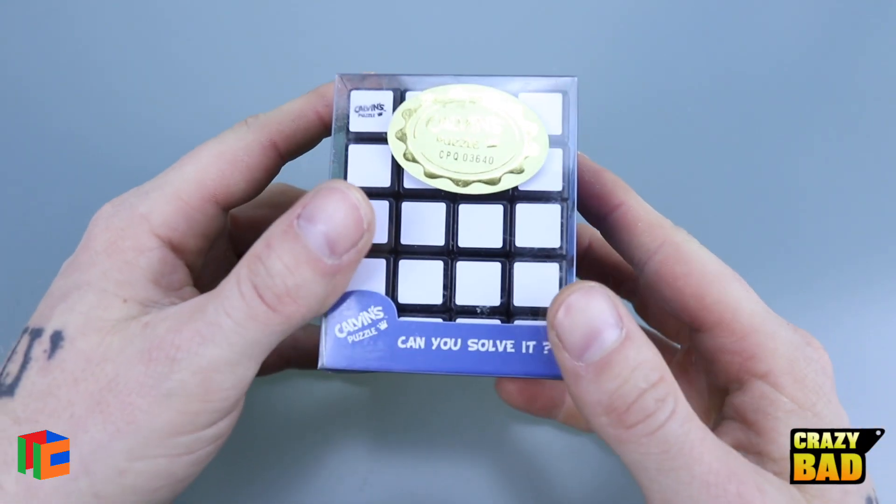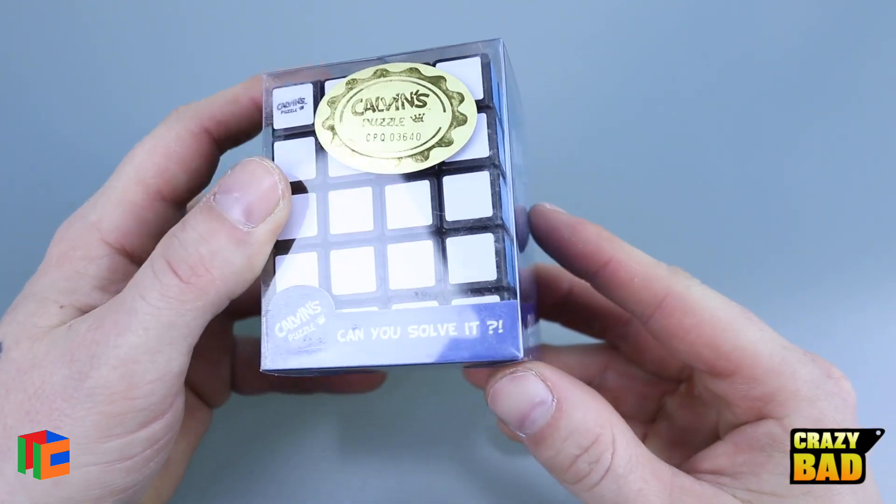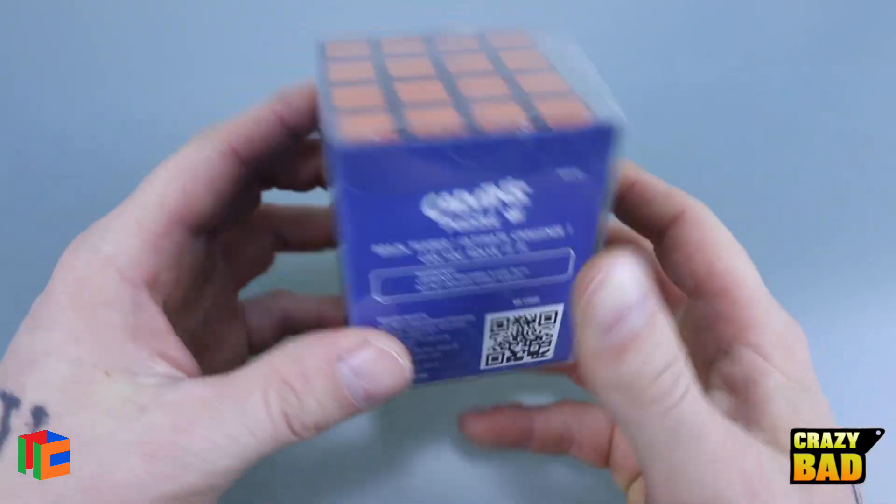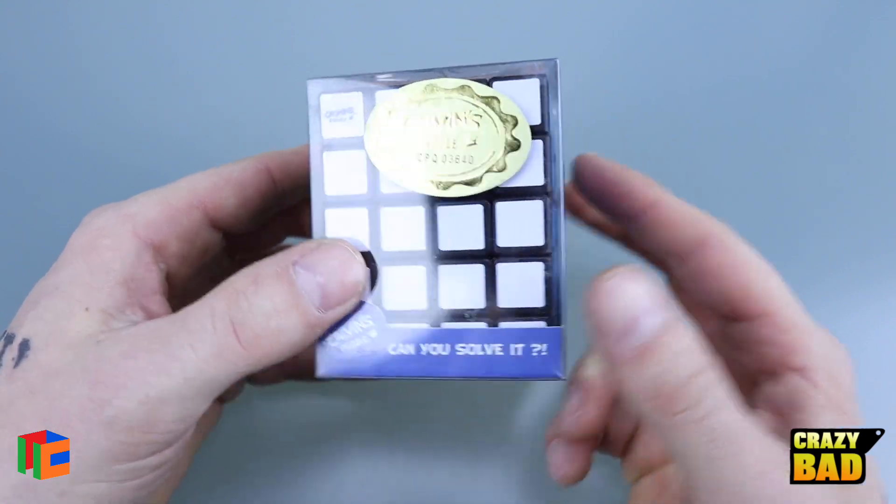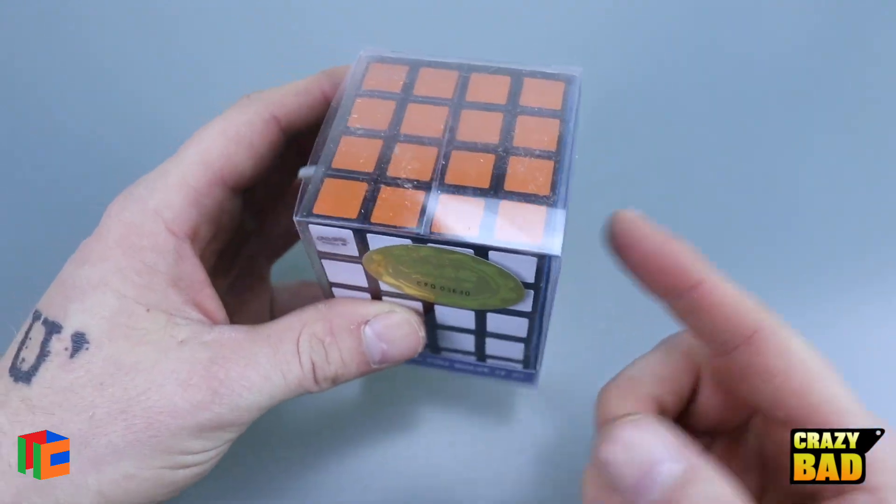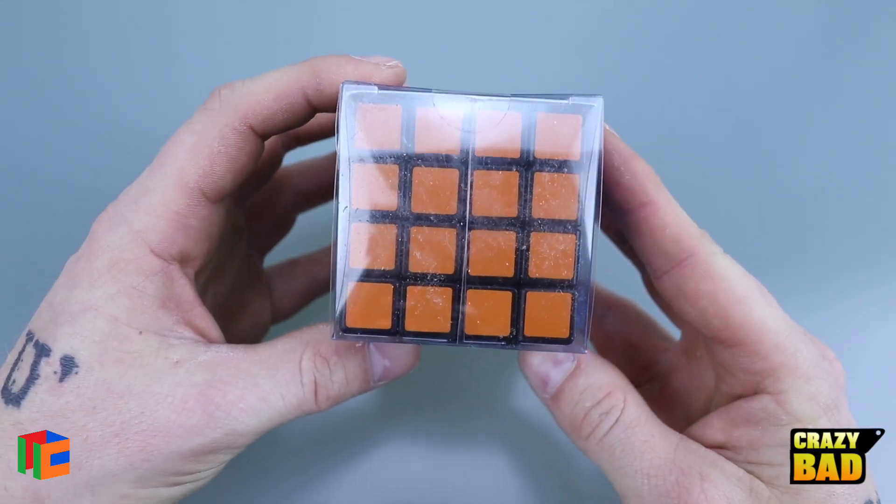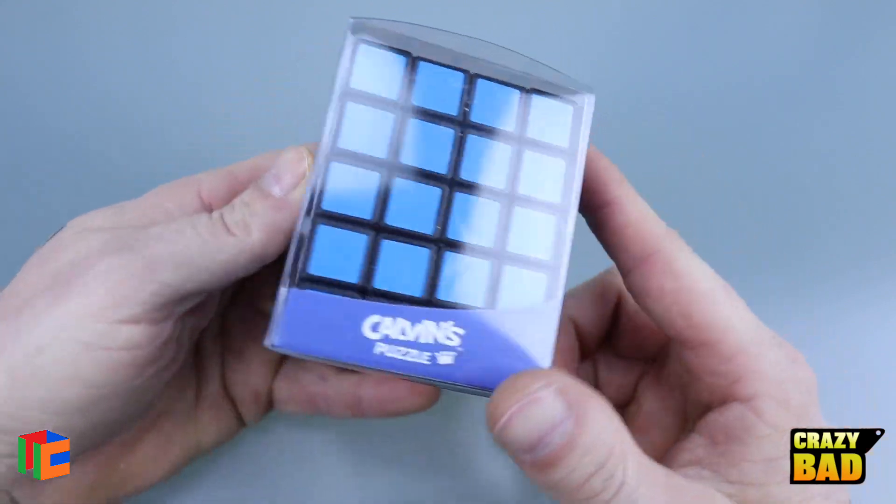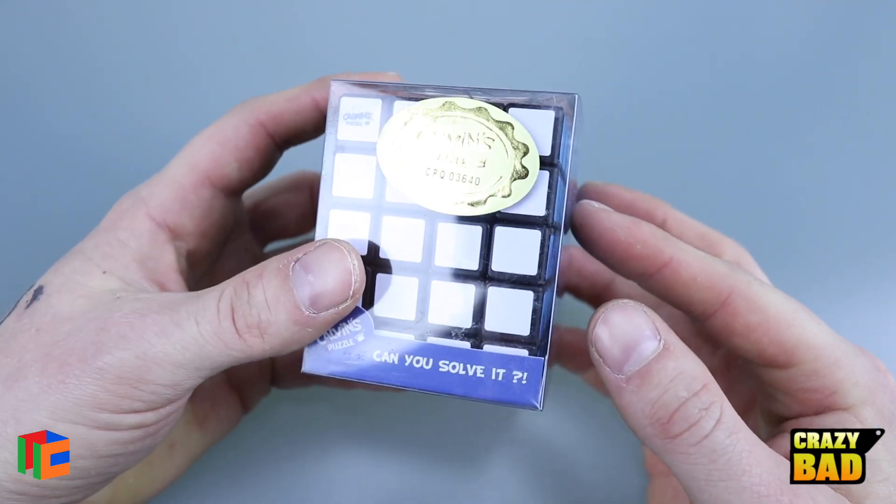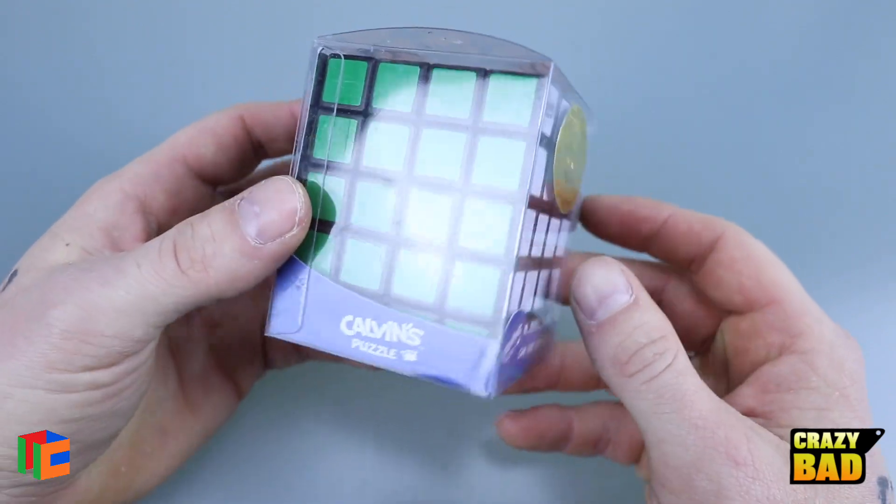Hello everybody, in today's video we're going to be taking a look at the Crazy Bad 4x4x5 off-center cube. I made a prototype and a bunch of copies that sold a long time ago, years ago, and then Calvin asked if he could mass-produce this about four years ago. I said sure, and then he never did.